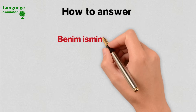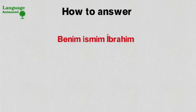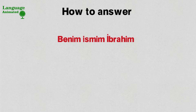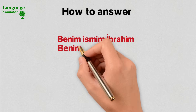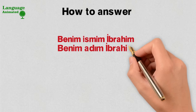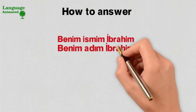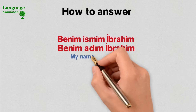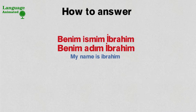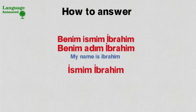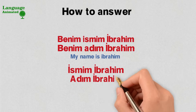To answer, you say 'benim ismim Ibrahim,' which means 'my name is Ibrahim.' Or you can say 'benim adım Ibrahim,' which also means 'my name is Ibrahim.' If you want to say it shortly, you can just say 'ismim Ibrahim' or 'adım Ibrahim.'